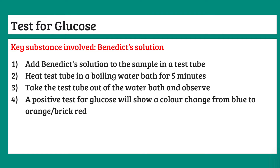Next is the test for glucose, and the key substance this time is Benedict's solution. This test has an extra step. First, add the Benedict's solution to the sample in a test tube. Then heat the test tube in a boiling water bath for five minutes. Take the test tube out and observe the color. The positive test — if glucose is present — shows a color change from blue to orange/brick red. Importantly, you must mention heating to observe the color change.